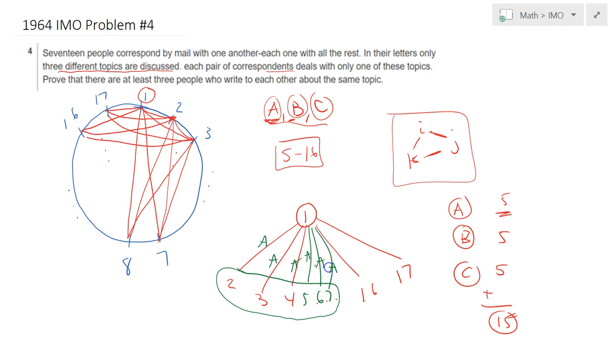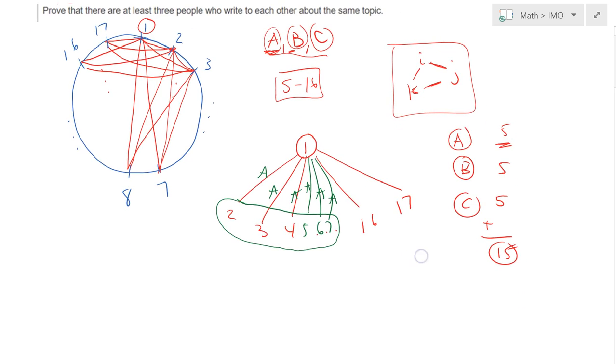So this is the main subject of correspondence and we know we should have at least 6 people where person 1 is corresponding with the same topic. Now first of all, the people 2 through 7, they are also corresponding amongst themselves.